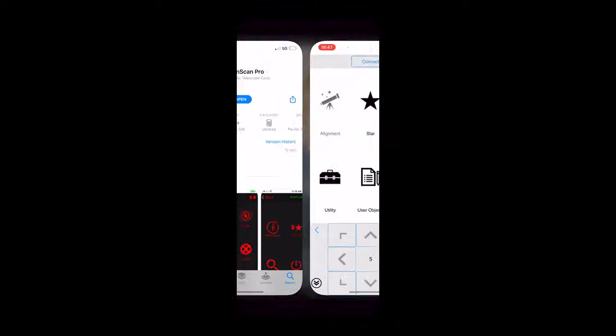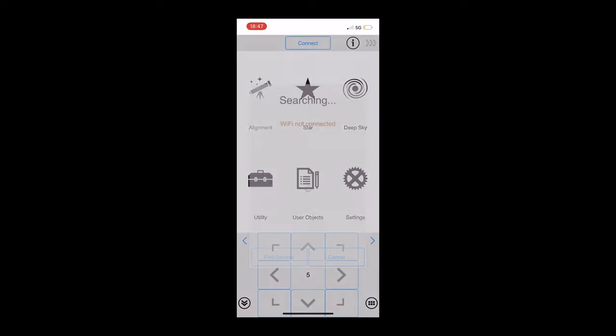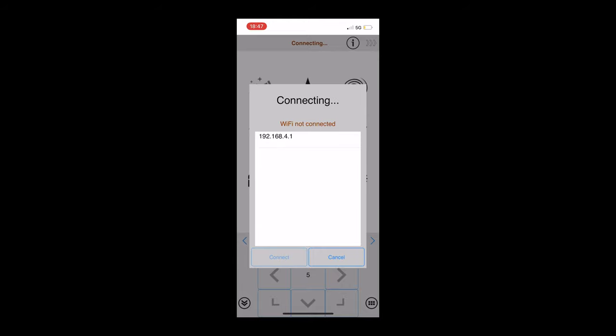Like the Star Adventurer 2i the GTI does come with integrated WiFi. This comes in handy when you want to control your mount from your smartphone.